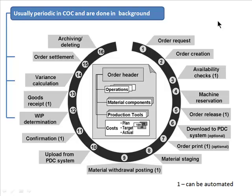Settlement, variance calculation, work-in-progress determination, and similar processes are usually periodic operations — they won't be done immediately at the time of order completion but are done periodically on a time basis. We will also talk about cost object controlling shortly.